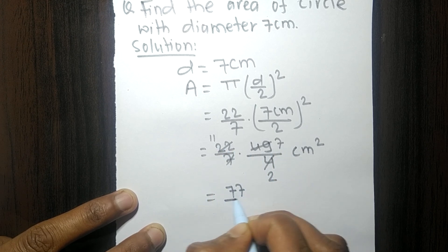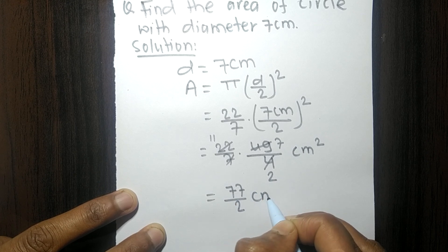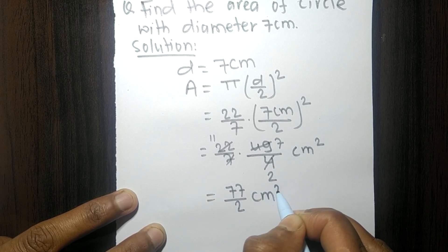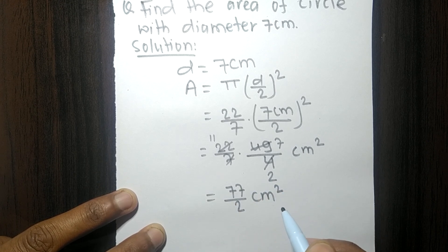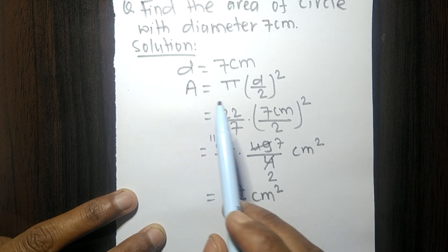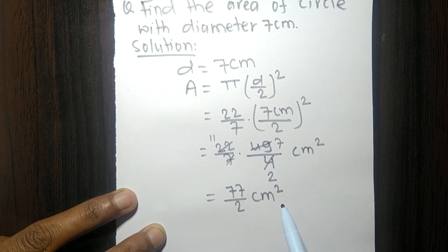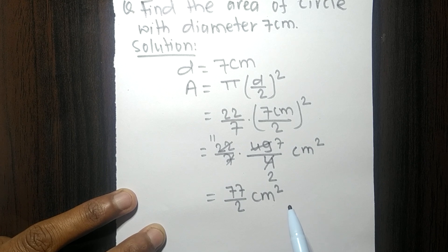Therefore, the area of the circle is 77/2 centimeters squared. That's all for today — thanks for watching.